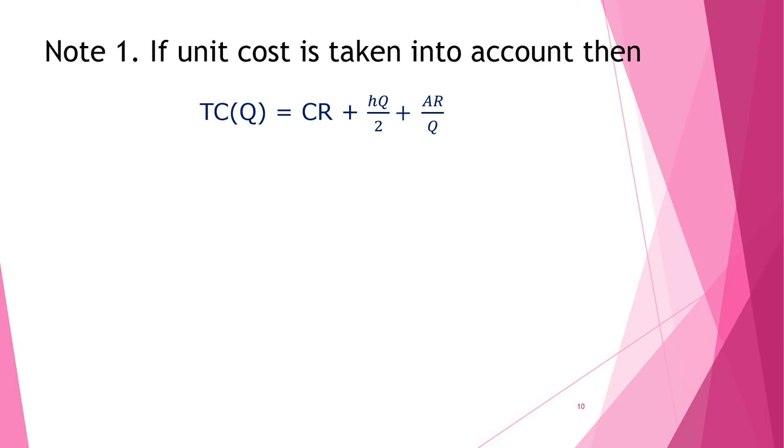HQ/2 is holding cost and AR/Q is ordering cost. We can visualize that purchase cost is independent of Q. So the optimum quantity which we obtained in the previous explanation, that is Q₀ = √(2AR/H), will not get affected even if purchase cost is taken into account. Second observation one can have from this expression is that, as purchase cost is constant, it will simply get added into total cost without contributing in finding economic order quantity.